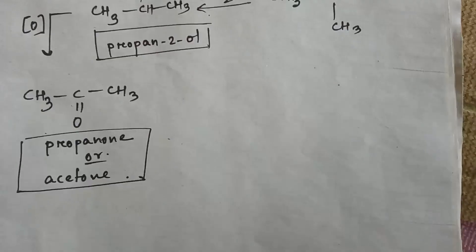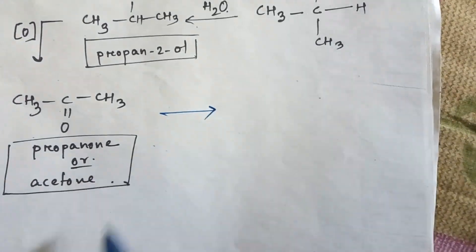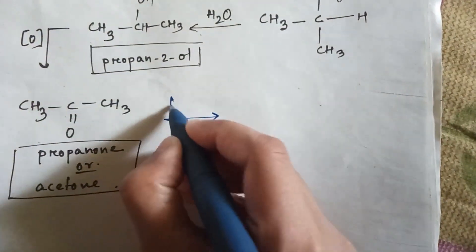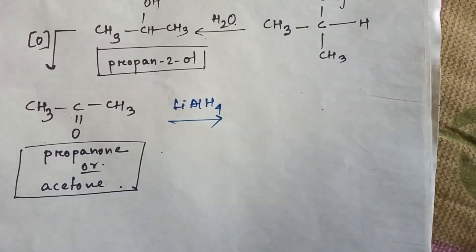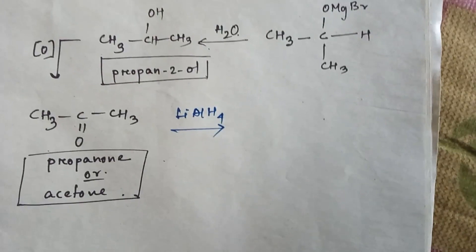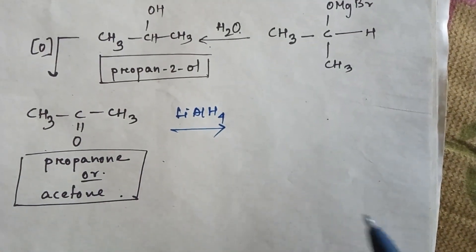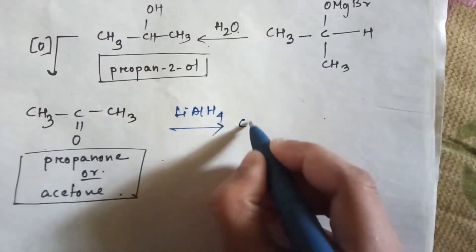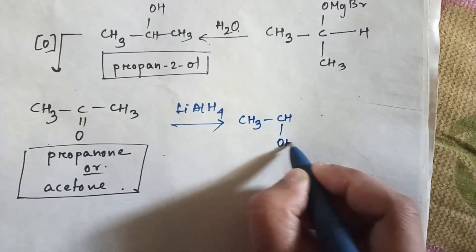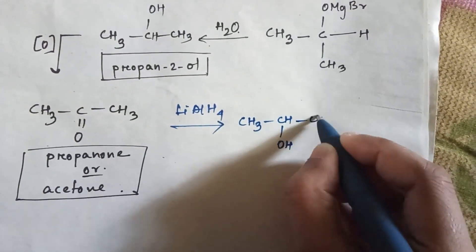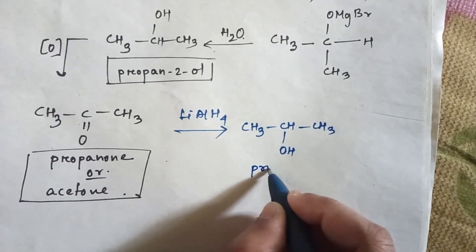Now if you add lithium aluminum hydride and do reduction, then this ketone will convert into an alcohol. That alcohol is a 2° alcohol, that is propan-2-ol.